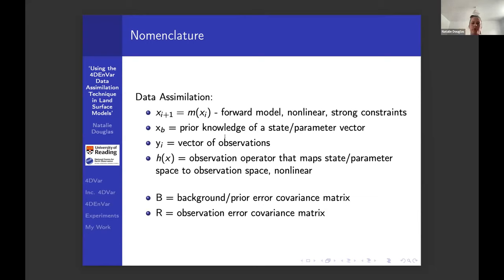We also have an observation operator which maps us from the state space to the observation space. Because we have two sources of information, we have two bits of uncertainty information as well. I've introduced all of the notation I'm using: X's for the state vector, Y for observations, H for observation operator, and B and R are your background and observation error covariance matrices.